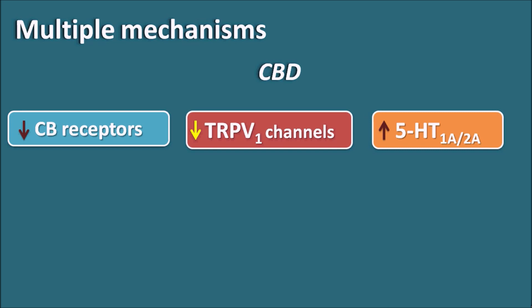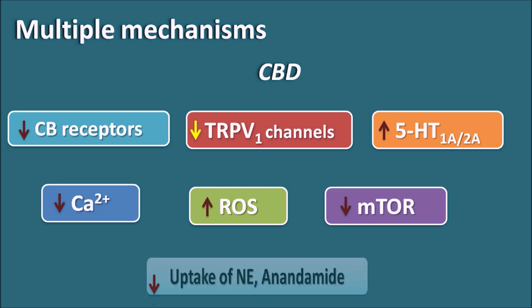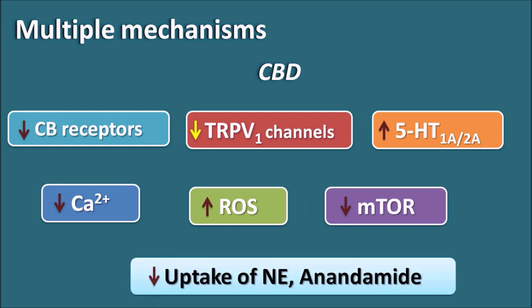CBD can also increase the 5-HT1A or 5-HT2A receptor activity, thereby controlling neurotransmission. Apart from these actions, cannabidiol shows multiple mechanisms: it can block calcium channels responsible for neurotransmission, increase reactive oxygen species, inhibit mTOR signaling, and inhibit the uptake of norepinephrine, anandamide, and other types of neurotransmitters.